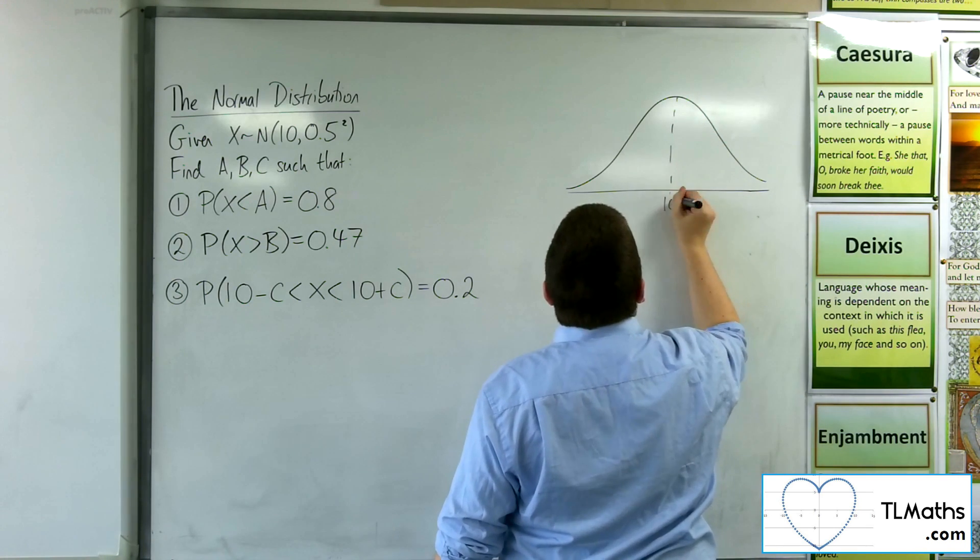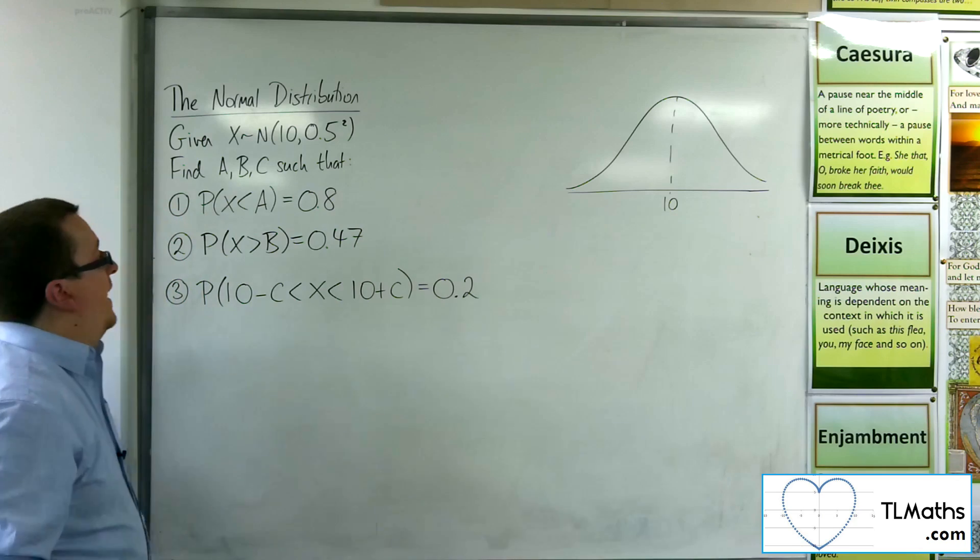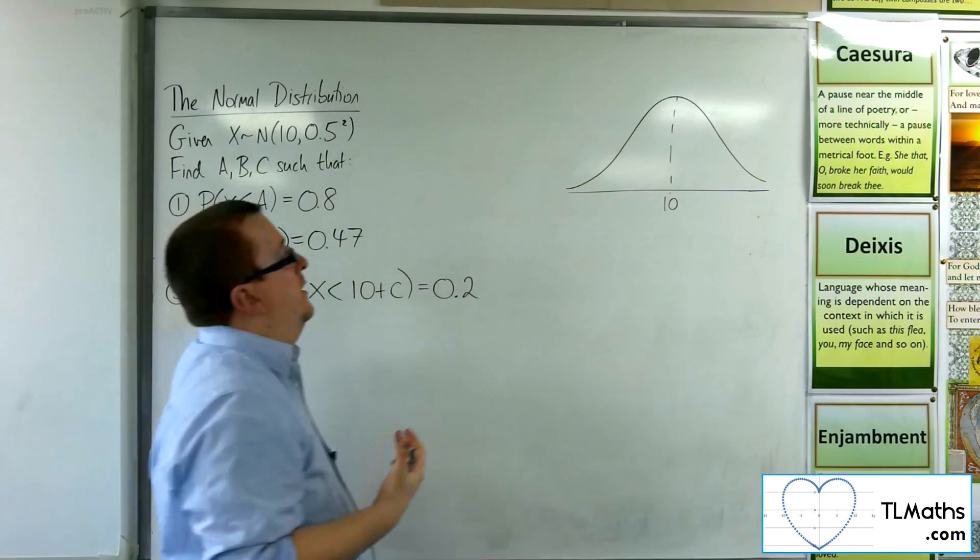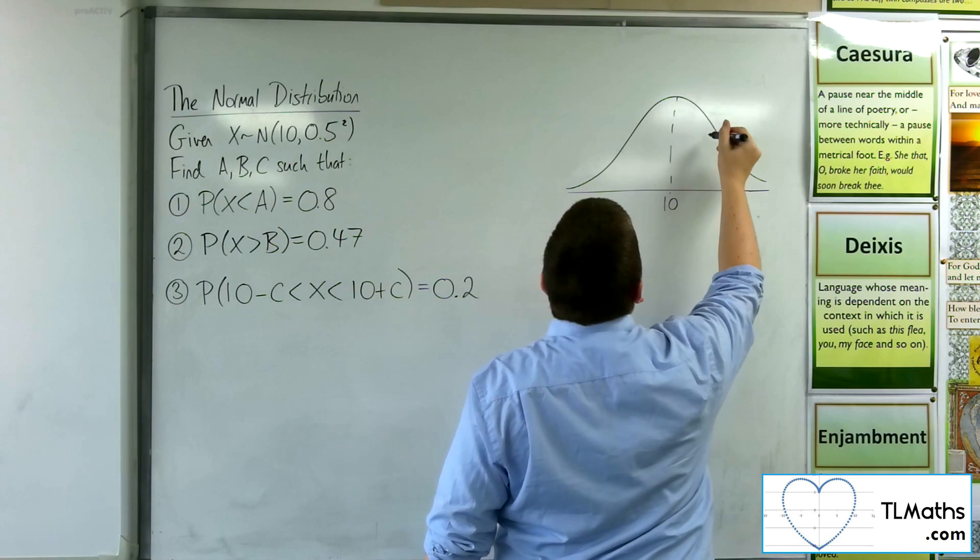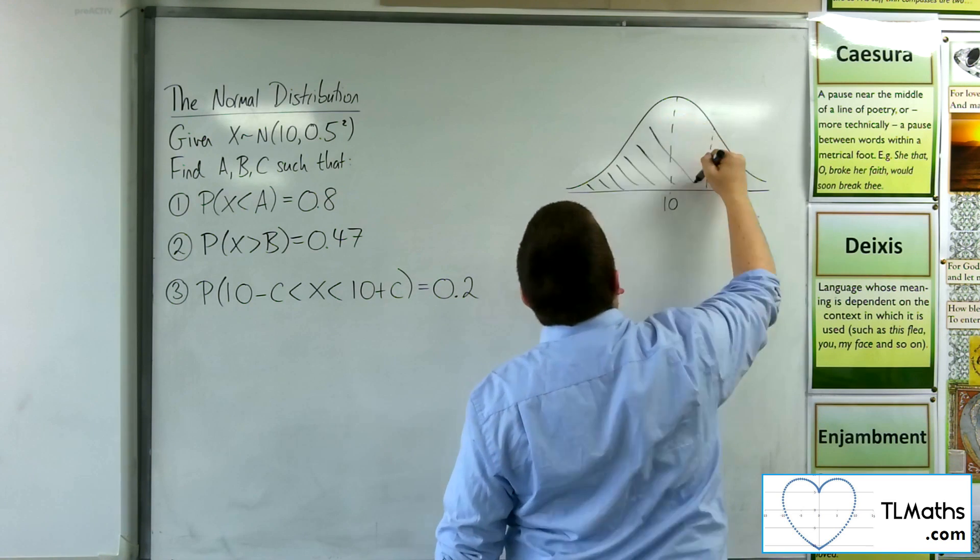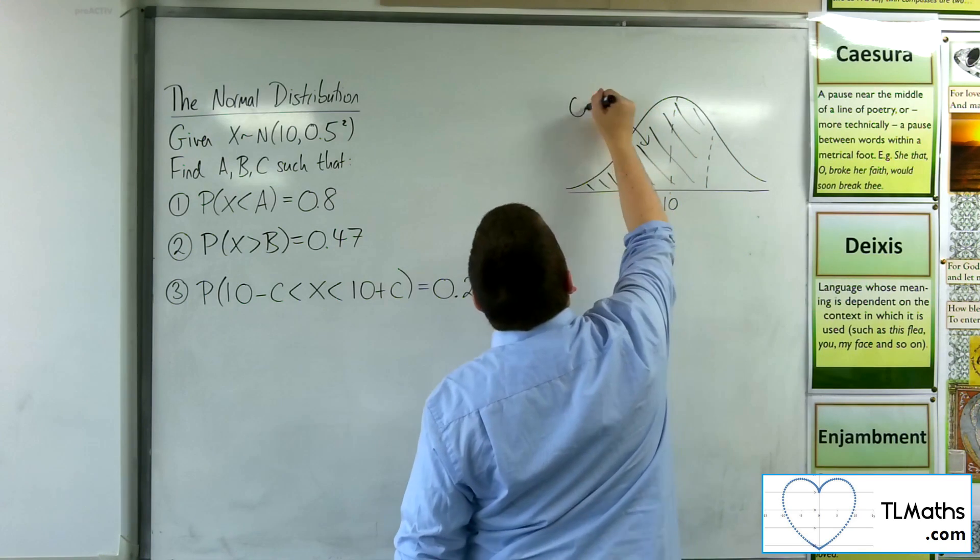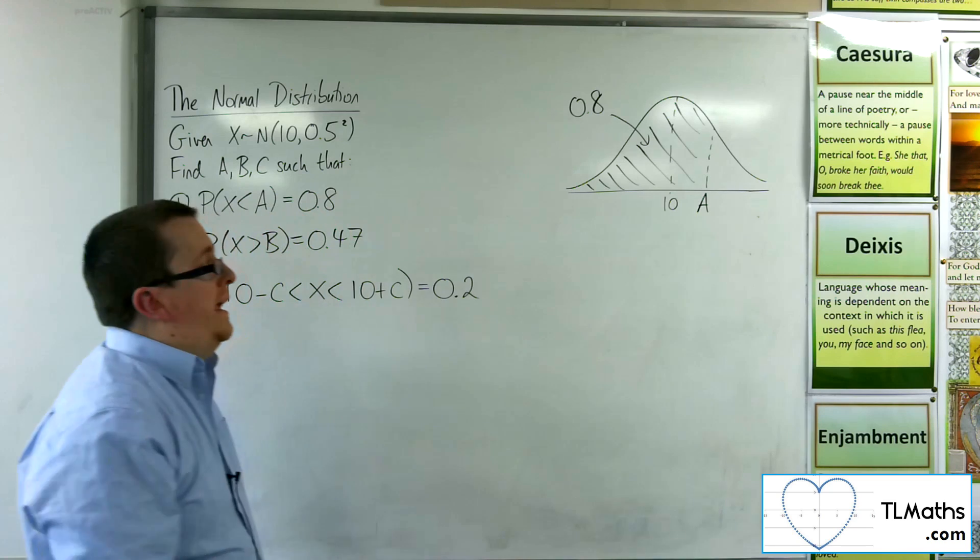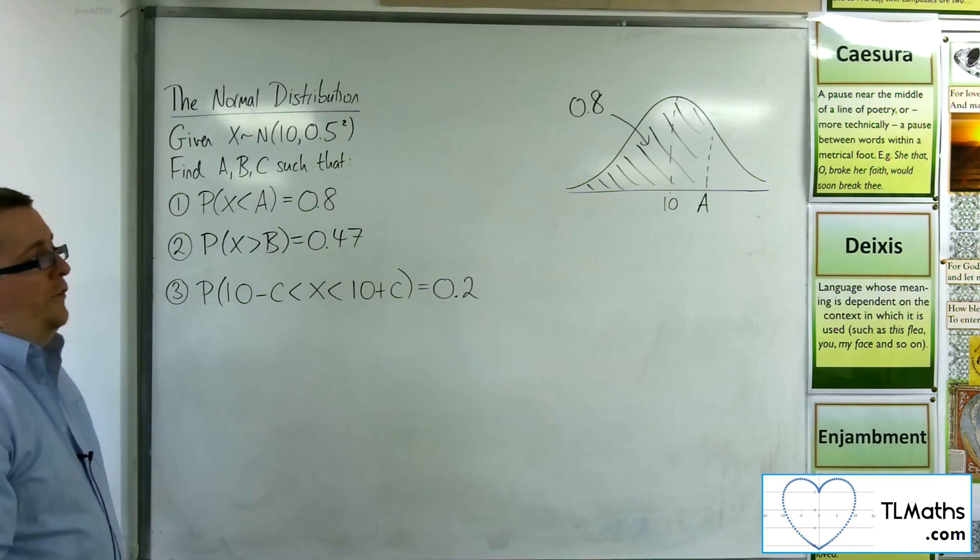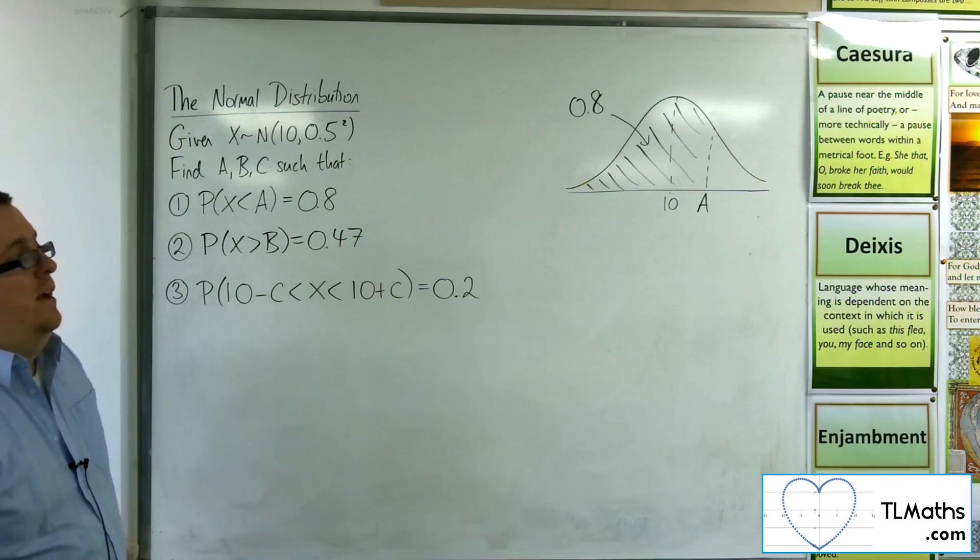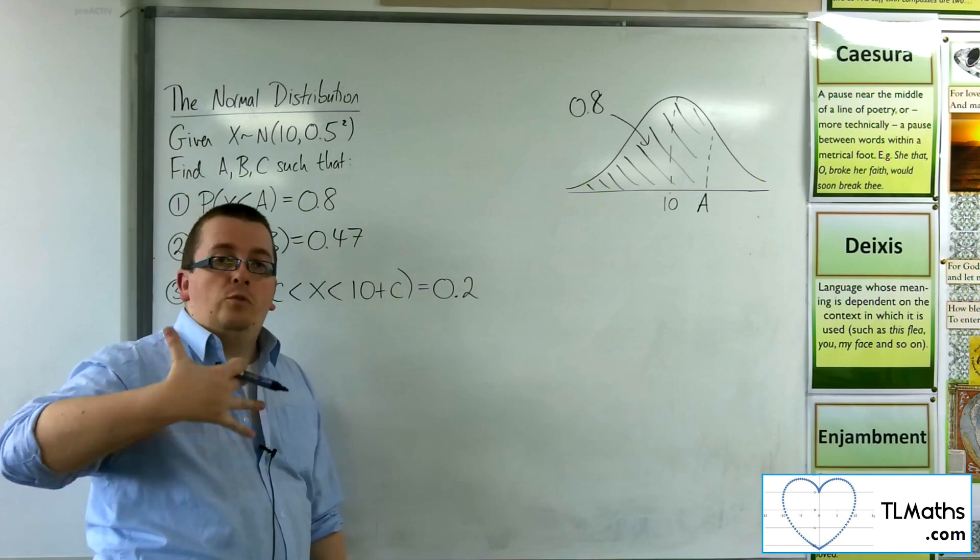We've got a mean of 10. Now if 80% is to be less than a particular value, then if that's 50%, then 80% would have to be all of this. So that's your 80%. And that's got to be less than this value a that we're looking for. So the a value that we have there has got to be greater than 10. We can see by the diagram. So that would be an identifier to make sure that we've done this correctly.